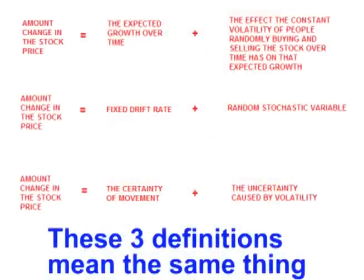Brownian motion assumes that there are two parts to random movement. The first is an overall constant driving force called the drift. The second is a random component. Therefore, the rate that the asset changes in value each day — the r value that the e is raised to — can be broken down into two parts: an overall drift and a random stochastic component.